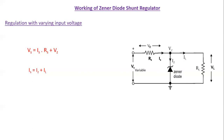So that is how it works when the input voltage varies. When the input voltage increases, the current IS will increase. IZ and IL can increase, but IL will remain constant because the output voltage should remain constant — VL should be equal to VZ, the Zener voltage, which is constant.